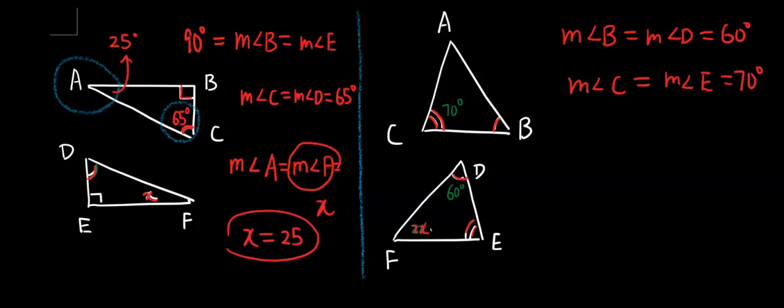Which means measure of angle A equals measure of angle F. Angle F says I'm 2x. Therefore, measure of angle A is 2x. Now, let's go back here.